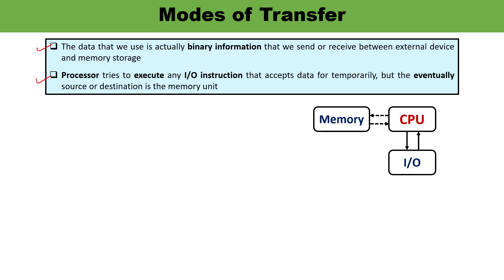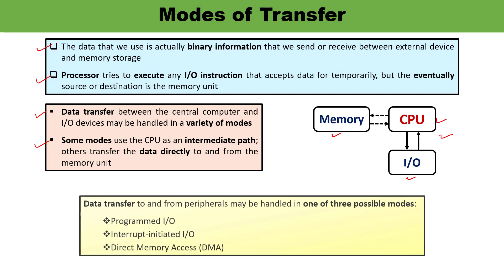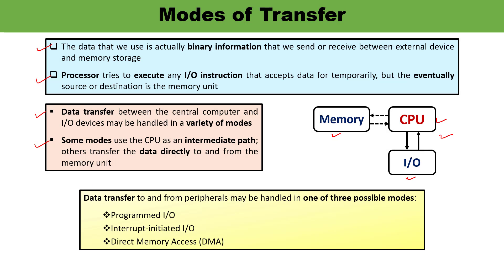Data transfer between CPU and IO devices may be done in different modes. In some modes, data transfer between CPU and IO is done where the CPU is the intermediate path, while in some cases data transfer can be done directly between memory and IO devices. There are three possible ways: Programmed IO, Interrupt Initiated IO, and Direct Memory Access. Let us talk about each one of them in detail.